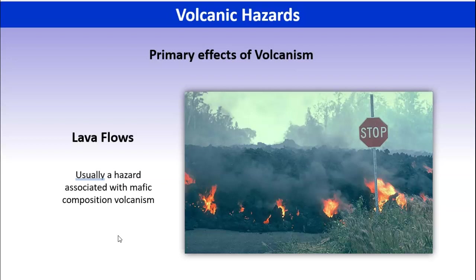So when we think of lava flow hazards, the big volcano we associate that with is mafic — the shield volcanoes. Now, it doesn't mean we can't get lava flows with other types of volcanoes, like our stratovolcanoes. But they're only affecting the local volcanic sides because they're thick and gooey and don't travel as far. Yes, they're a hazard, but lava flow is the main hazard of our shield volcanoes because shield volcanoes aren't explosive — we don't have these other types of hazards.